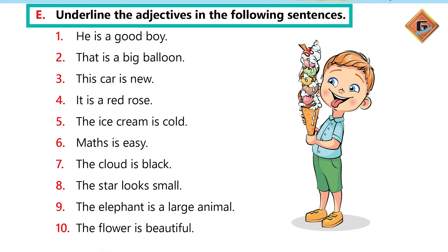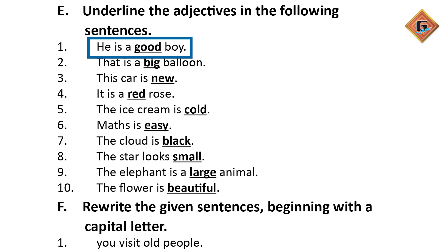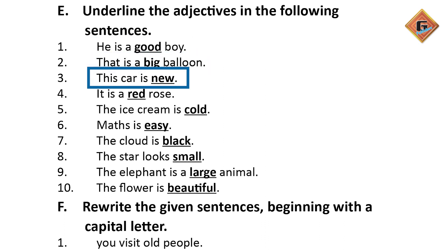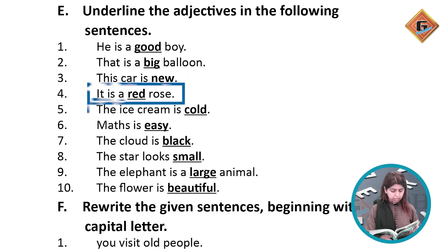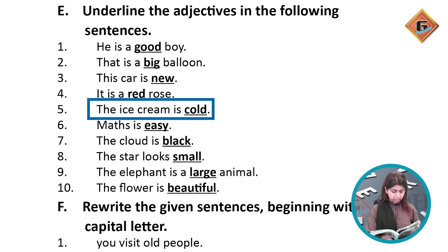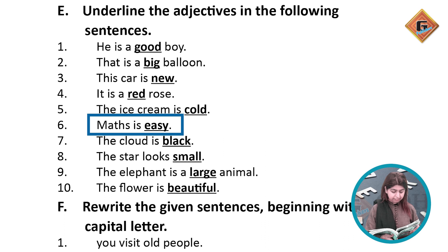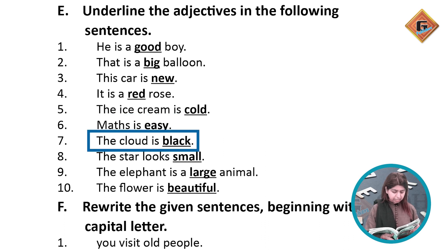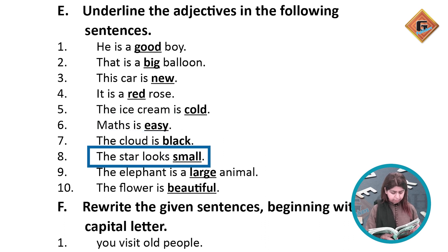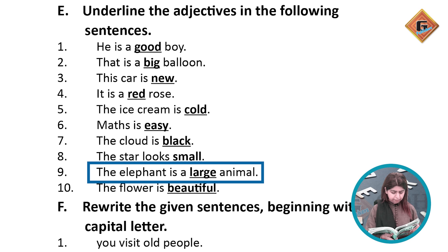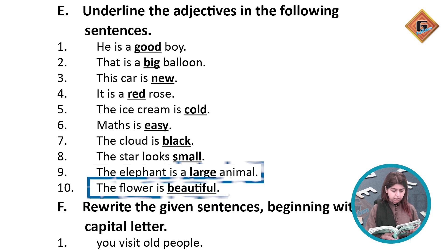Underline the adjectives in the following sentences. He is a good boy. That is a big balloon. This car is new. It is a red rose. The ice cream is cold. Math is easy. The cloud is black. The star looks small. The elephant is a large animal. The flower is beautiful.